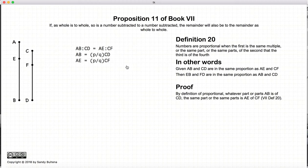So how do we prove this? Well, first, by the definition, if AB and CD and AE and CF are proportional, then AB is some fractions of CD, and AE is the same fractions of CF.